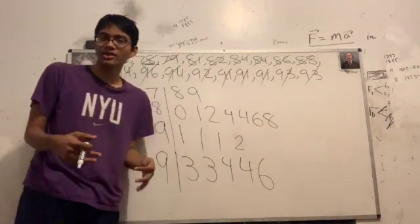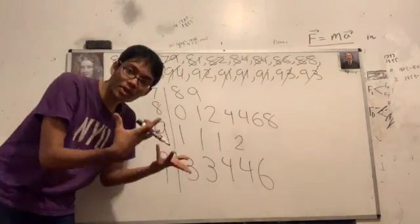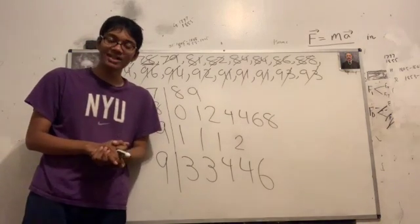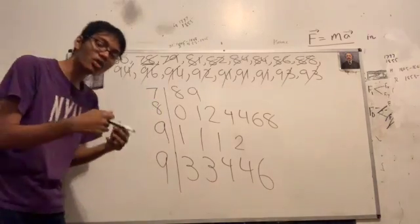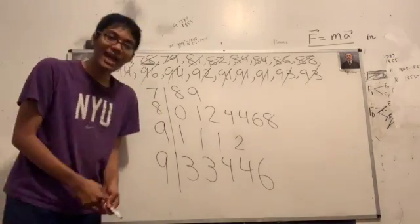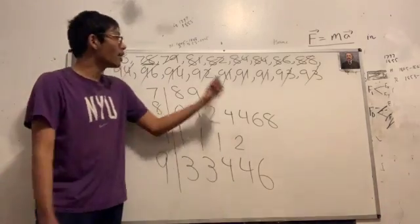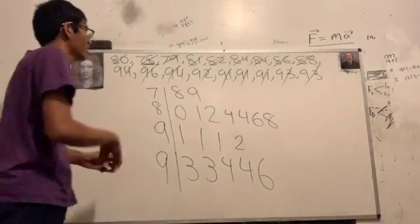And that right there is a stem and leaf display. It has a few advantages in the fact that you can actually see visually the numerical quantitative data you're working with. But those really are the main advantages of the stem and leaf display. Now we're going to move on to yet another quantitative data display. And that is the dot plot. Let's go ahead and make a dot plot of the resting heart rates of these waiting patients.